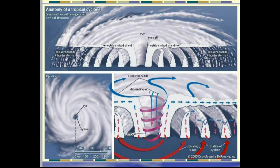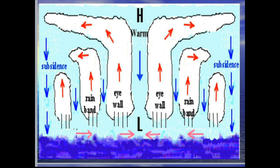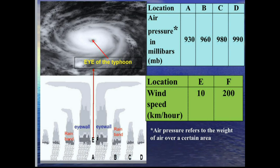Next is the eye wall. It is comprised of dense clouds surrounding the eye. The highest wind speed can be found at the eye wall. So when PAGASA reports say that a tropical cyclone has sustained winds of 200 kilometers per hour, for instance, this is referring to the winds at the eye wall.